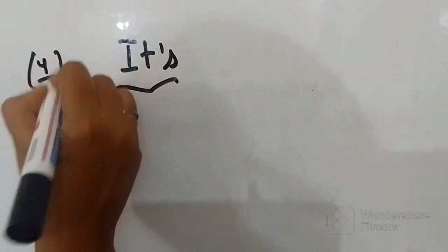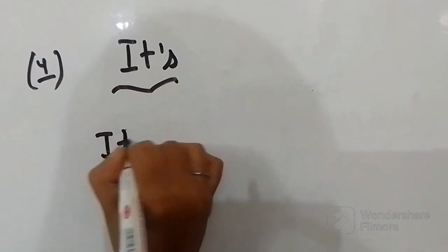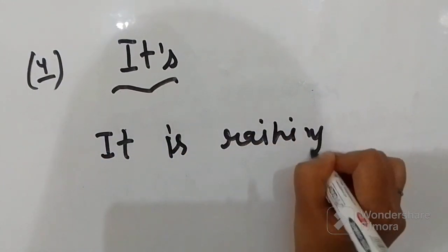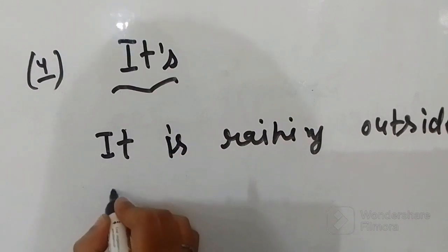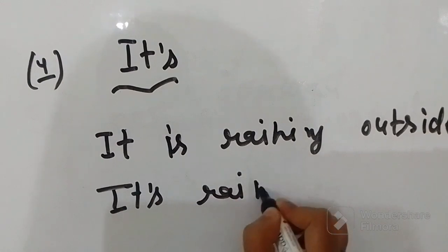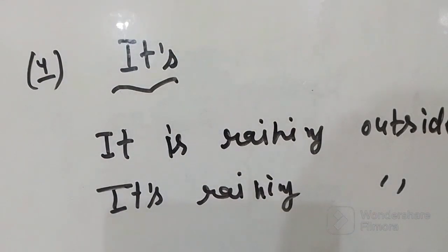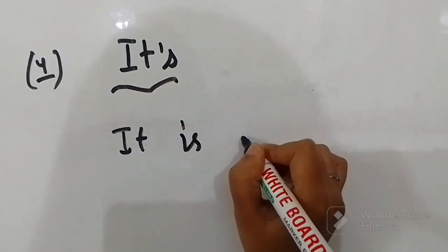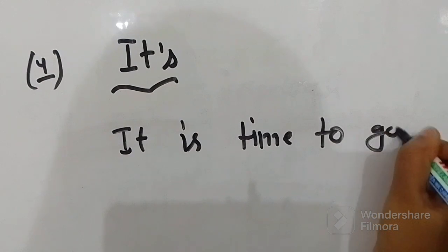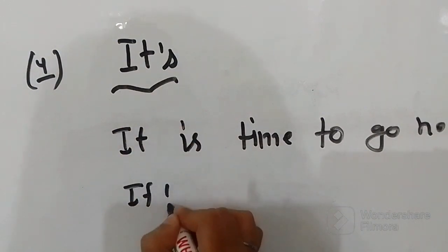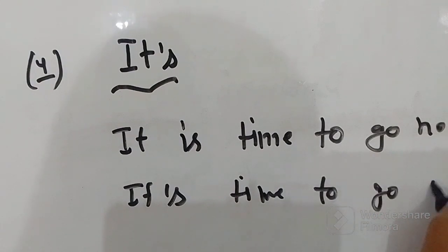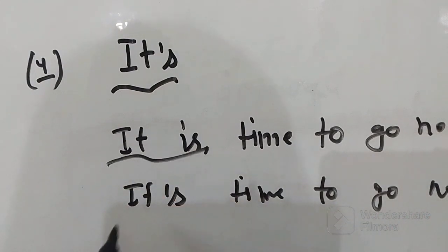Number one example for 'it's' with apostrophe: 'It is raining outside.' So this is how we use 'it is' and we use the contracted form and say 'It's raining outside.' Another example: 'It is time to go now.' So we will say 'It's time to go now.' Instead of saying 'it is', we use the contracted form and say 'it's'.